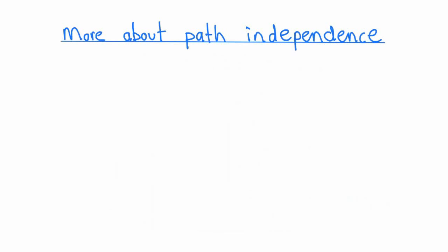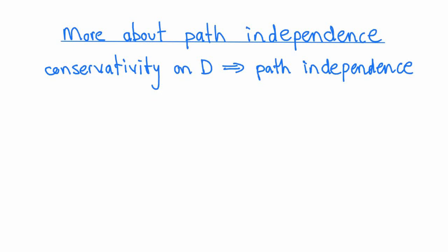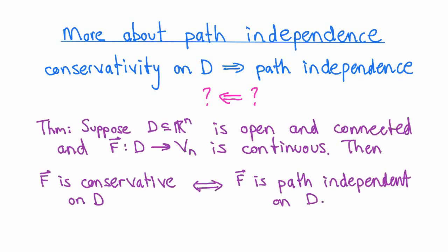Finally, let's talk more about the relationship between conservativity and path independence. We said that if F is conservative on an open region D of R^n, then line integrals are path independent. The converse also holds: as long as D is open and connected and F is continuous, F is conservative if and only if line integrals of F are path independent. Under mild hypotheses, conservativity is equivalent to path independence.